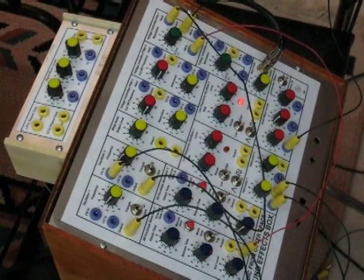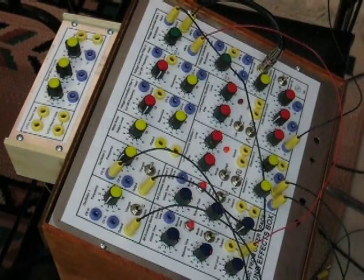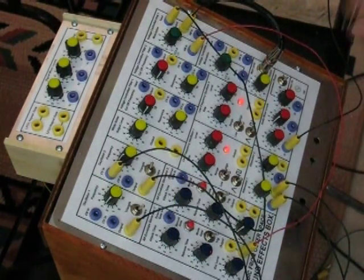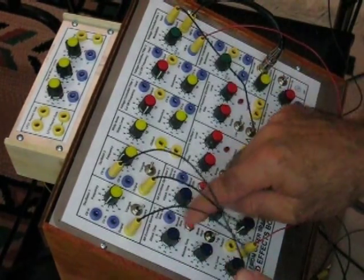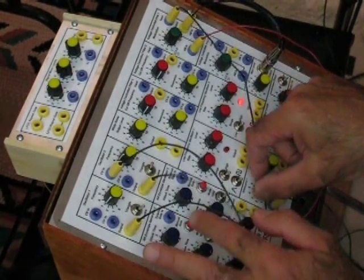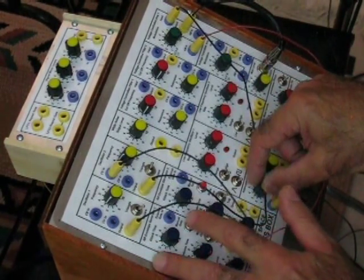And I'm controlling the amount of oscillation with one of these attenuators, which again is just a very simple voltage divider that's made with a potentiometer. And they are, of course, explained on the site. So as you turn this up, you get more and more modulation.